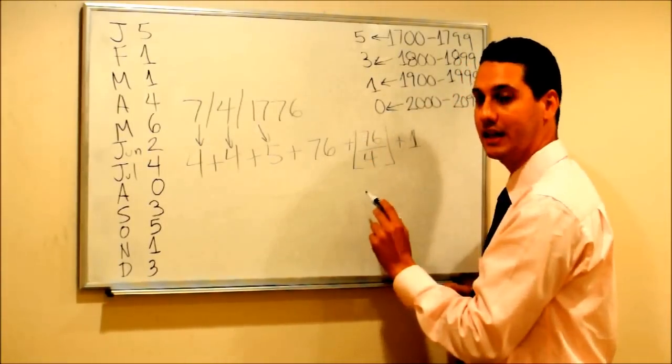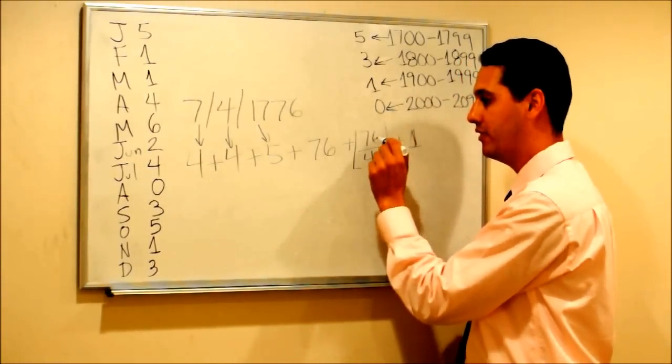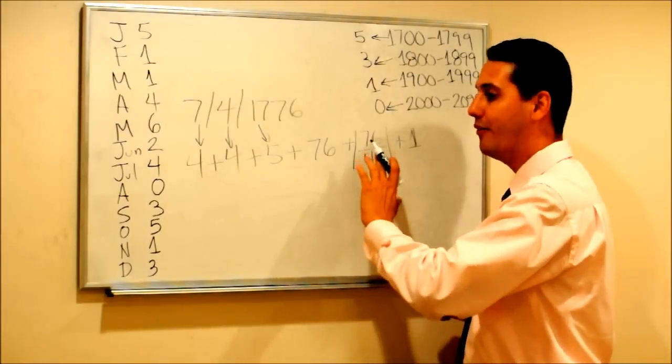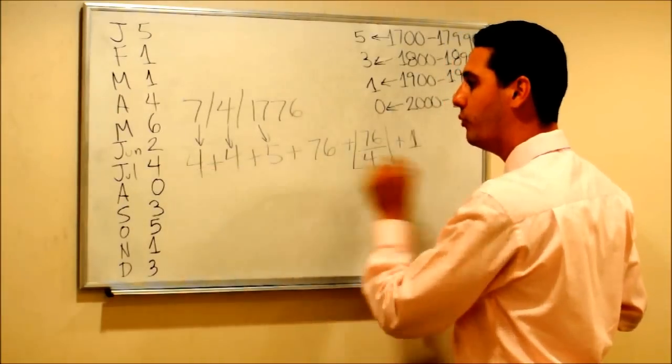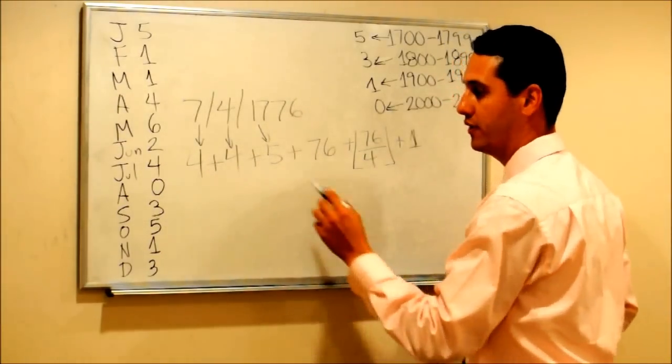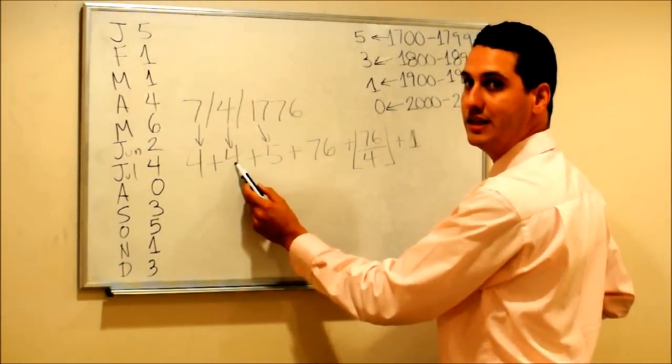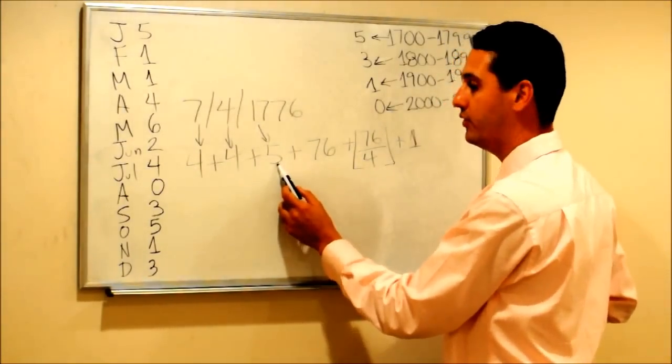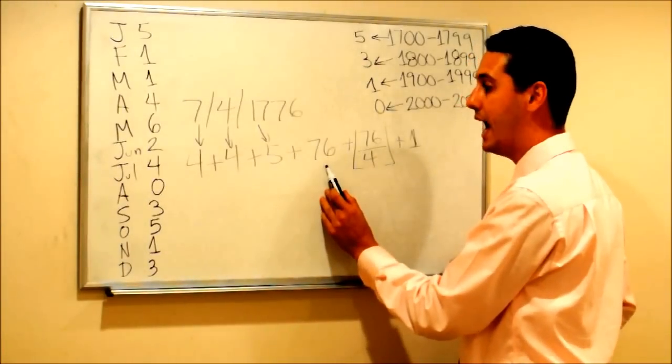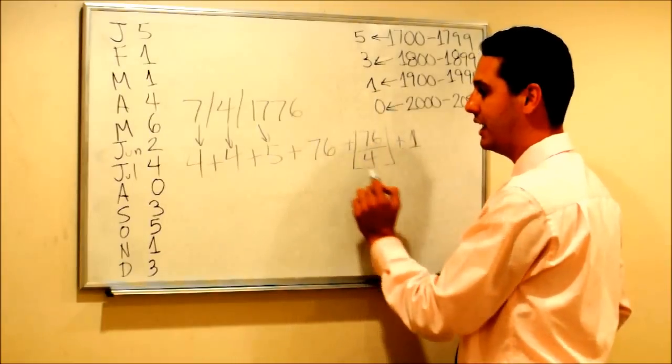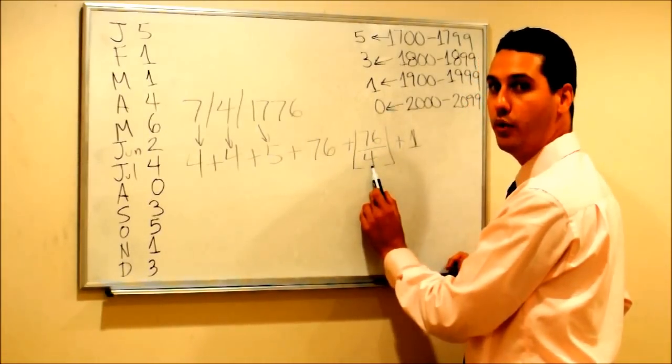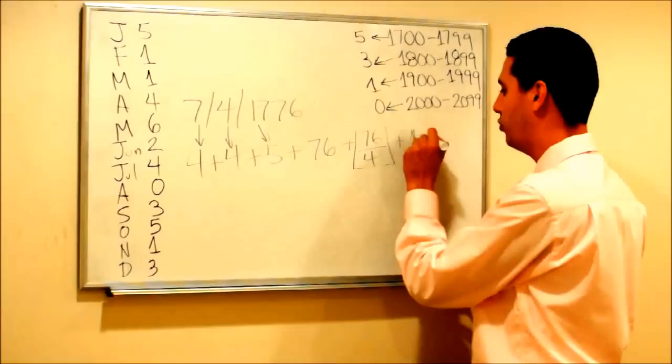We need to add the year divided by 4. This is not a normal bracket, this is a bracket that means you have to add 76 divided by 4 rounded down. What do we get after we do the whole addition? 4 plus 4 is 8, 8 plus 5 is 13, 13 plus 76 is 89. This is exactly 19. 89 plus 19 is 108.